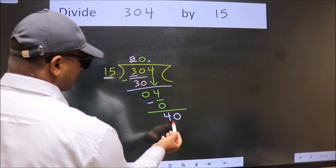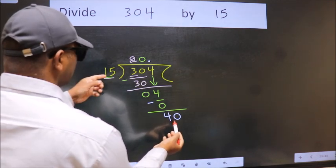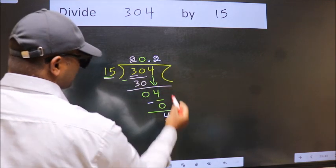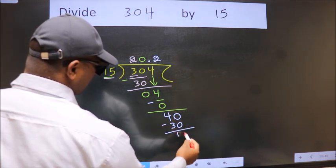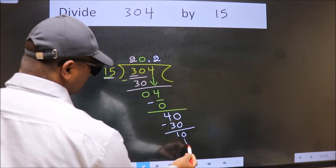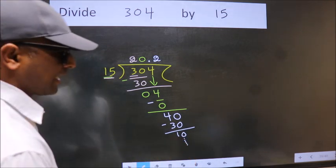So now we can put a dot and take 0, making 40. A number close to 40 in the 15 table is 15 times 2, which is 30. Now we subtract and get 10.